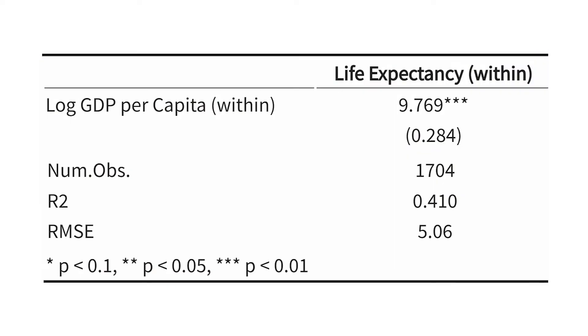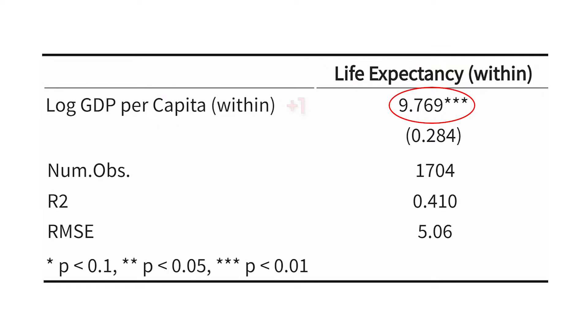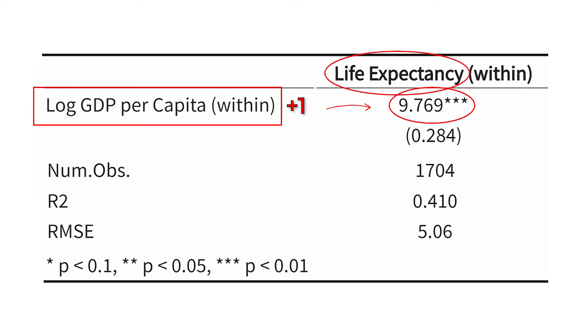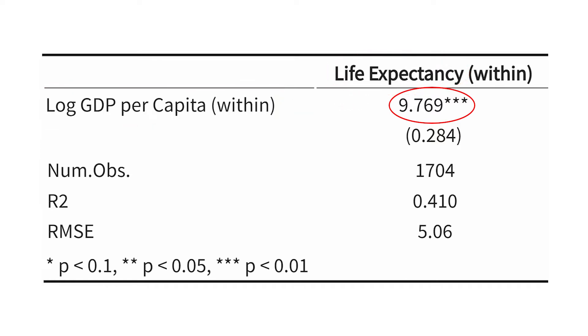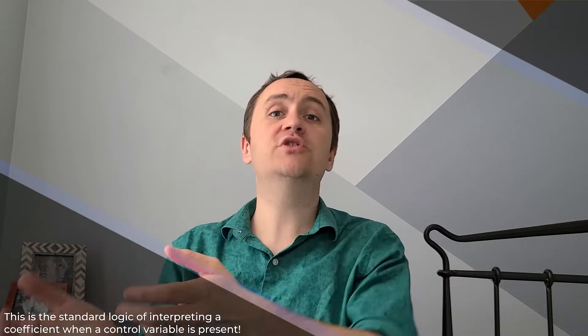Interpreting fixed effects estimates is the same as interpreting any other regression — you just keep in mind you're controlling for individual and focusing on within variation. For example, regressing life expectancy on a country's log GDP per capita gives a coefficient of 9.769, meaning a one-unit increase in log GDP per capita is associated with a 9.769-unit increase in life expectancy within country — comparing the same country across time, not different countries to each other.